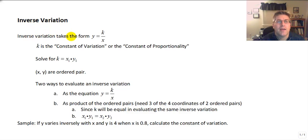An inverse variation takes the form of y equals k divided by x, different than direct, which was y equals kx. But still k is the constant of variation or the constant of proportionality.